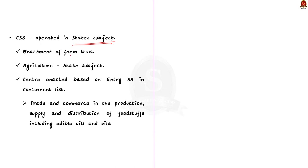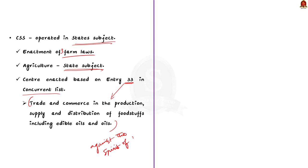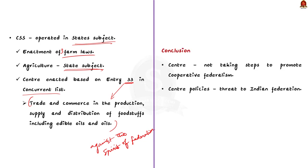Another instance is the enactment of three farm laws. Agriculture is a subject listed in the state list under the Constitution, but the center enacted laws under Entry 33 of the concurrent list, which relates to trade and commerce in the production, supply, and distribution of foodstuffs including edible oils. Even though these laws were repealed, the act of enactment itself was against the spirit of the Constitution. All these instances clearly indicate that the center has not taken steps to promote cooperative federalism; instead, its policies have served as a threat to Indian federation.